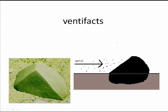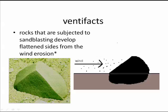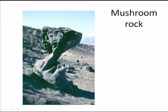If sand hits a rock with enough force, the rock is sandblasted and eroded into a ventifact — flat sides as a result of the sand erosion. Mushroom Rock in Death Valley is a famous example of a ventifact. You'll notice that only the bottom of it got worn away because sand never gets more than a meter high.